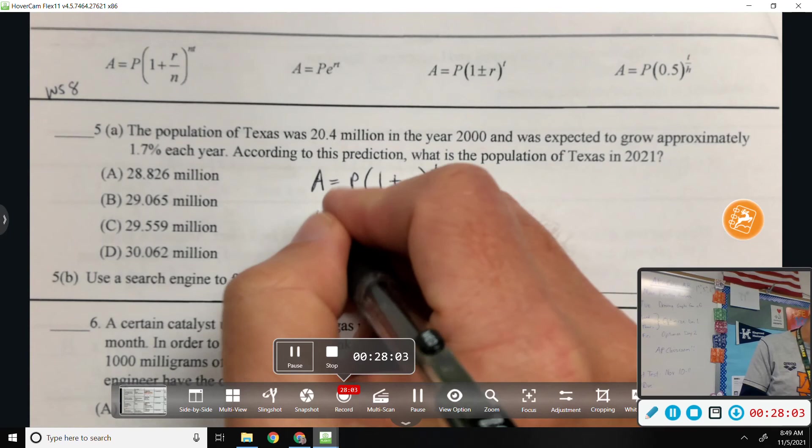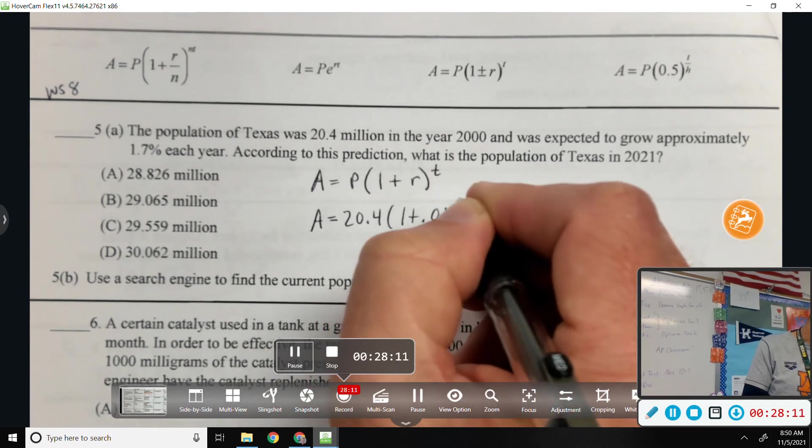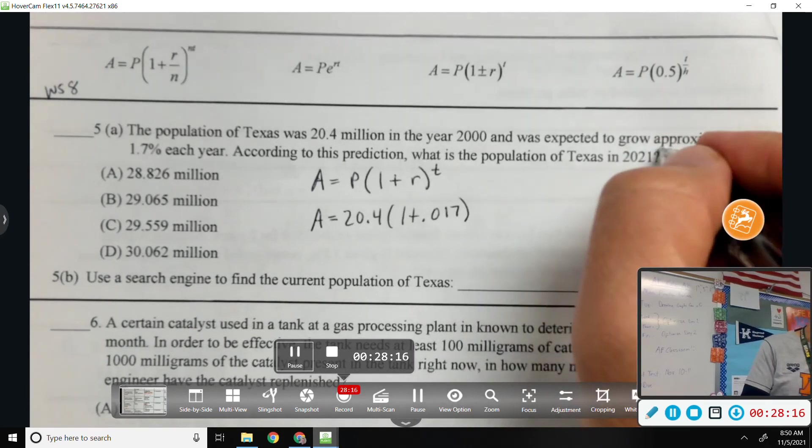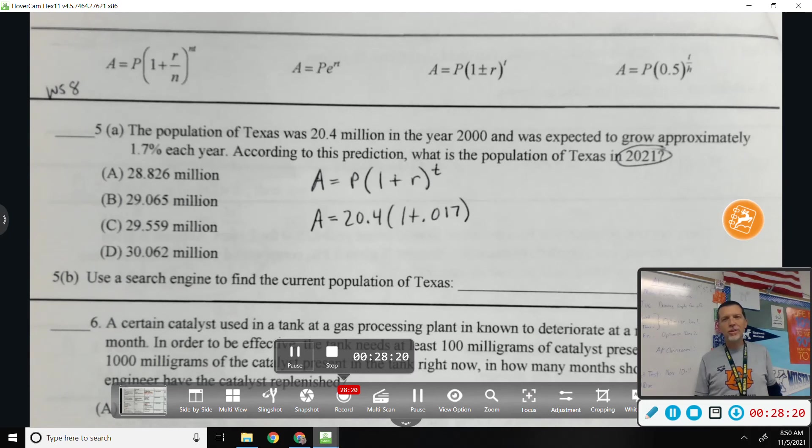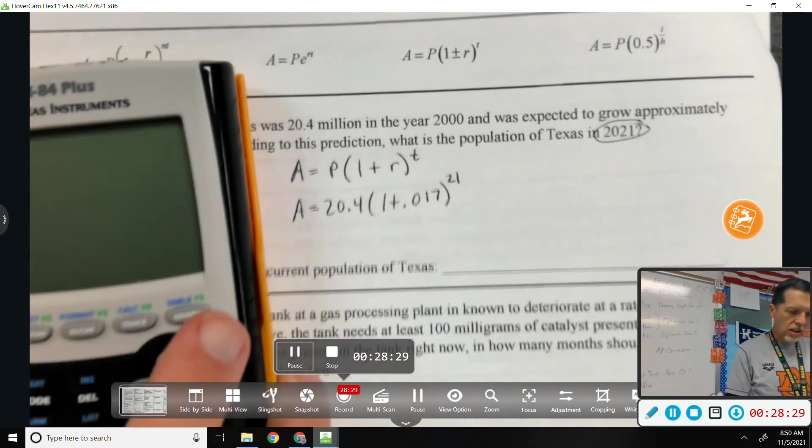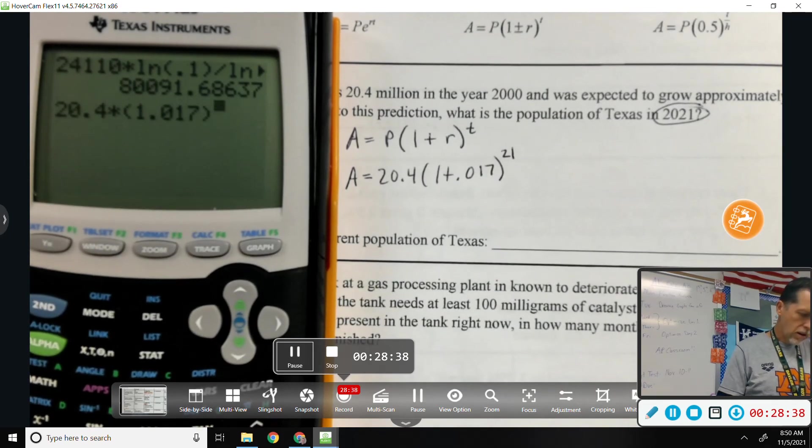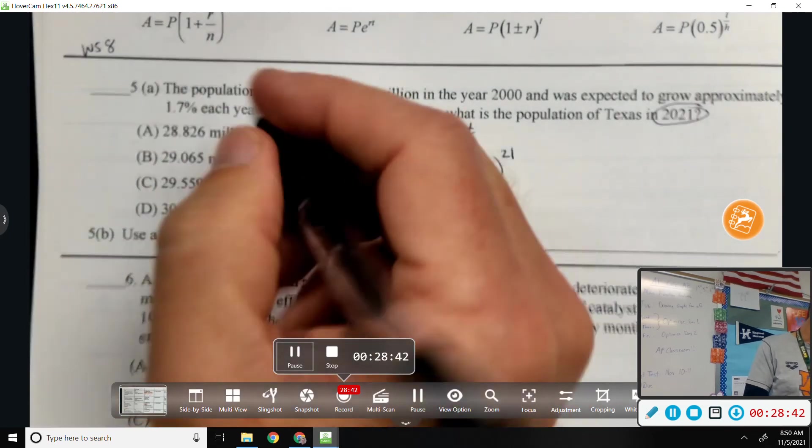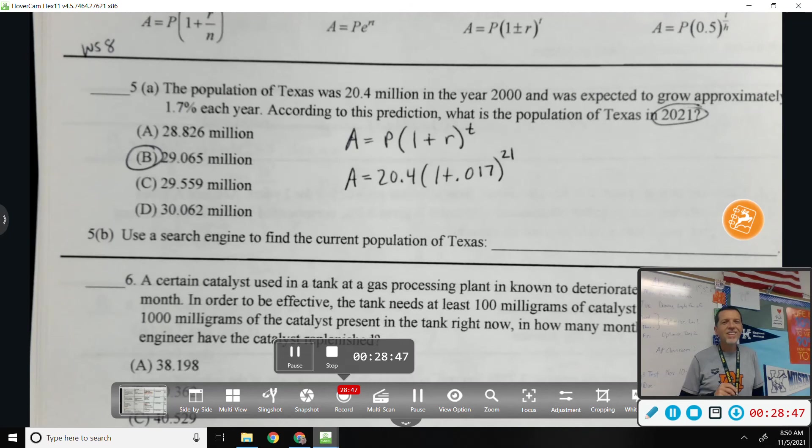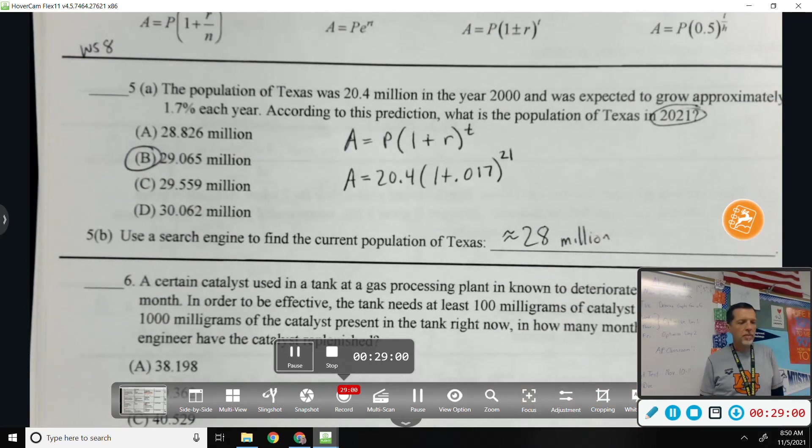After is, we don't know. The before is the 20.4. 0.017. And in 2021, what will we use for T? 21. Yeah, good. Don't put 2021 up there. So now that's a calculator problem. 29.065 million. Did anybody look up the current population of Texas? You looked it up? Yeah. And it was 28 million-ish. Yeah. So, that approximation was pretty good.